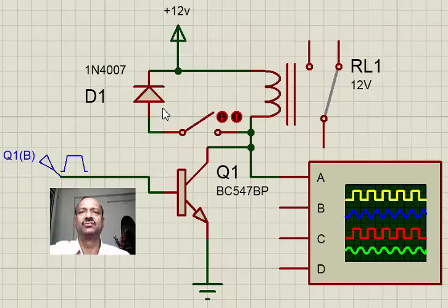Actually what happens is that while the relay is on the current flows through the transistor and when the relay is off the current doesn't flow.